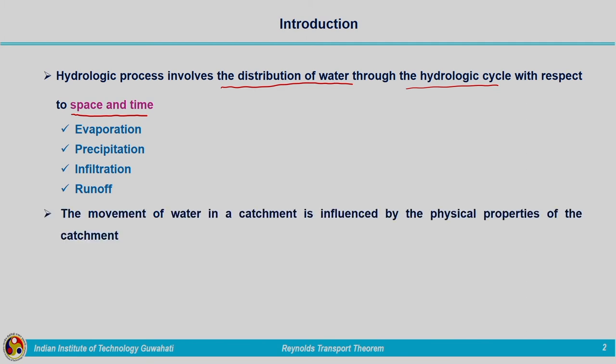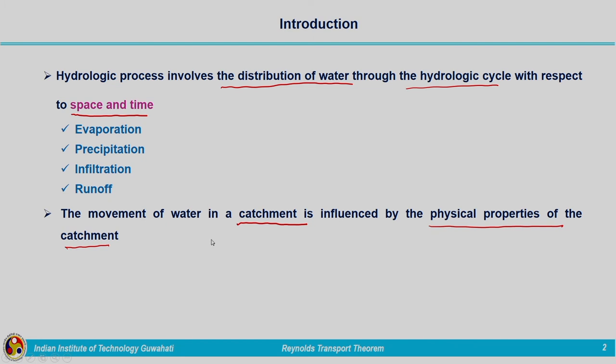If you are considering a catchment, the movement of water in a catchment is influenced by the physical properties of the catchment. Physical properties in the sense — the catchment will have a certain length, certain width, and it will have an area. Depending on those physical characteristics, there will be changes taking place in the movement of water within that catchment.